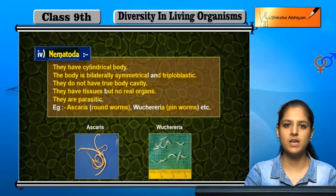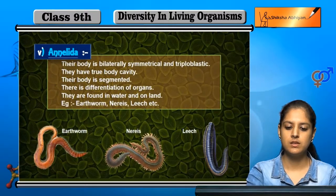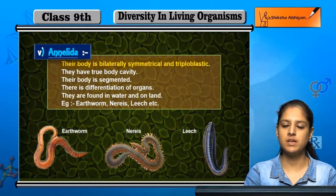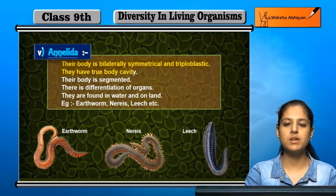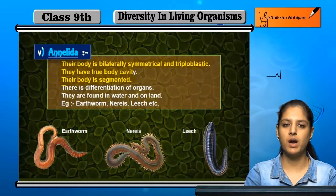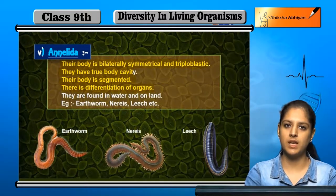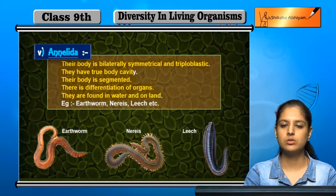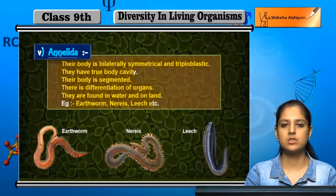Next is Annelida. Their body is bilaterally symmetrical and triploblastic, and they have a true body cavity. Their body has segments or portions, and there is differentiation of organs. They are found in both water and land. Examples include earthworms, Nereis, leech, etc.